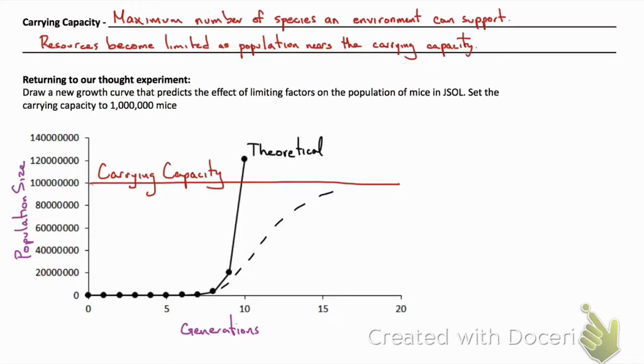As we near the carrying capacity, the growth rate essentially becomes zero. With the presence of those limiting factors and because of limitation in resources and energy, what we find is that this population size would approach, maybe reach, the carrying capacity but not extend beyond it.